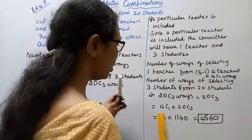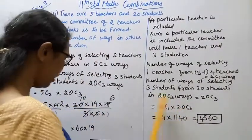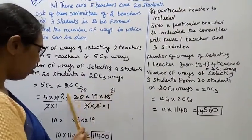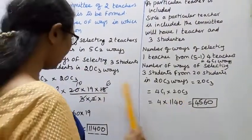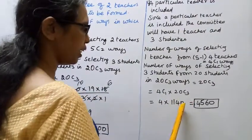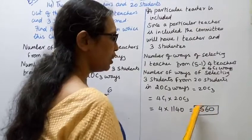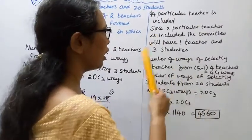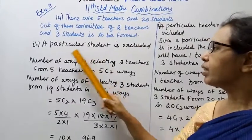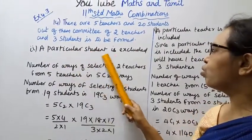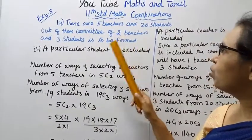4C1 equals 4, and 20C3 equals 1140. So 4C1 into 20C3 equals 4 multiplied by 1140, which gives the answer 4560.